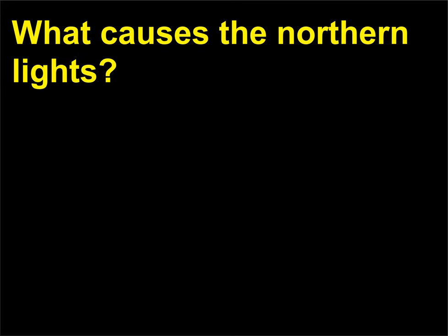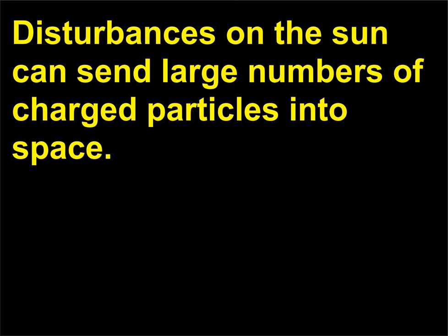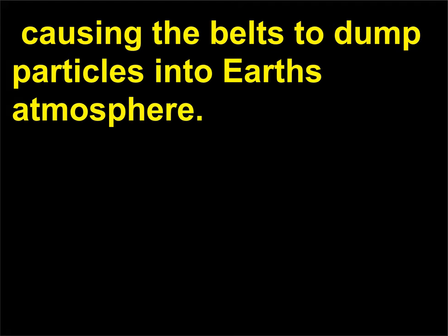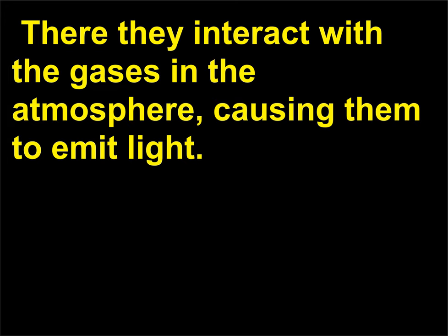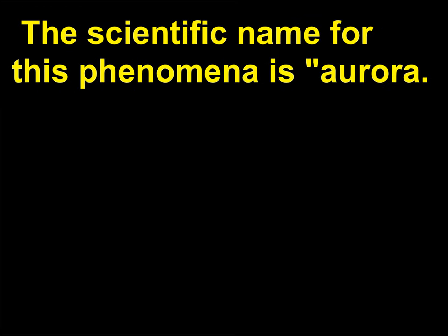What causes the northern lights? Disturbances on the sun can send large numbers of charged particles into space. When they reach Earth they disturb the Van Allen belts, causing the belts to dump particles into Earth's atmosphere. There they interact with the gases in the atmosphere, causing them to emit light. The scientific name for this phenomenon is aurora.